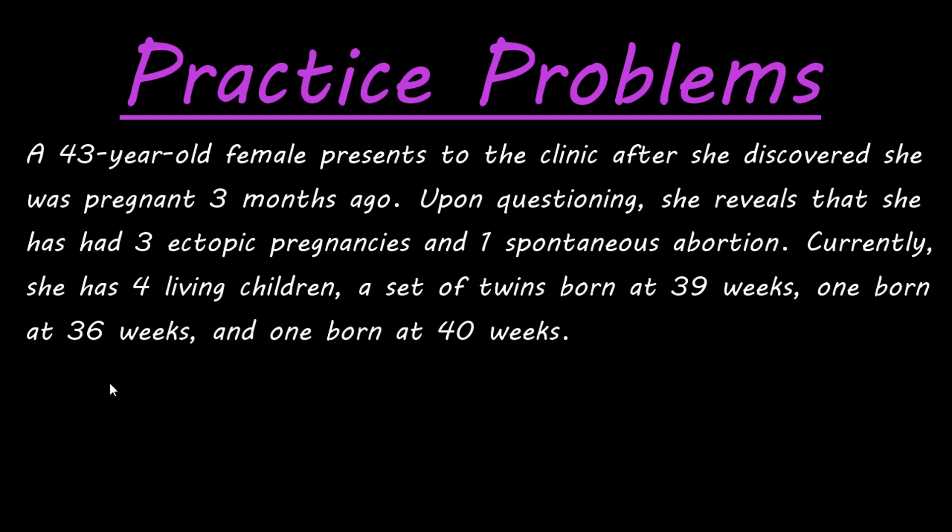Let's go ahead and try this practice example of a female patient and calculate her Gravida, Para, and GTPAL. We have a 43-year-old female who presents to the clinic after she discovered she was pregnant three months ago. Upon questioning, she reveals that she has had three ectopic pregnancies and one spontaneous abortion. Currently she has four living children: a set of twins born at 39 weeks, one born at 36 weeks, and one born at 40 weeks.